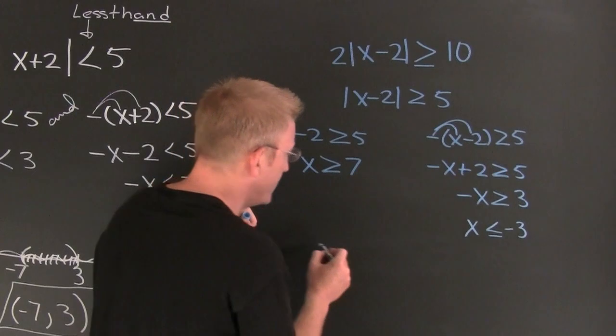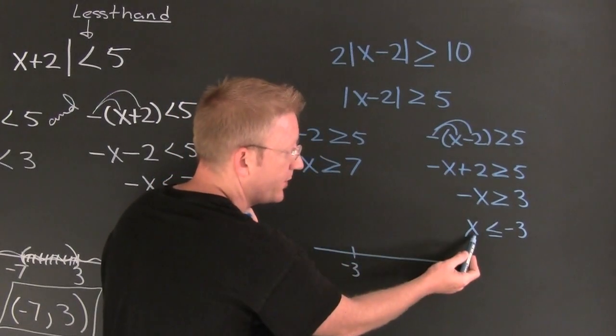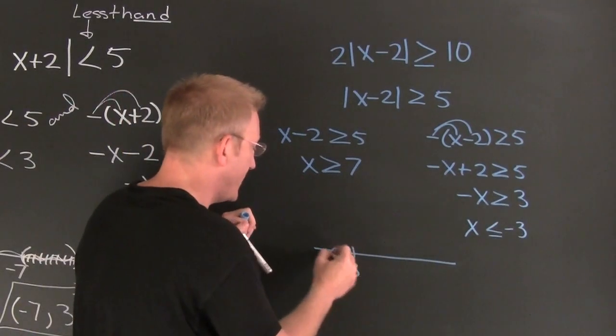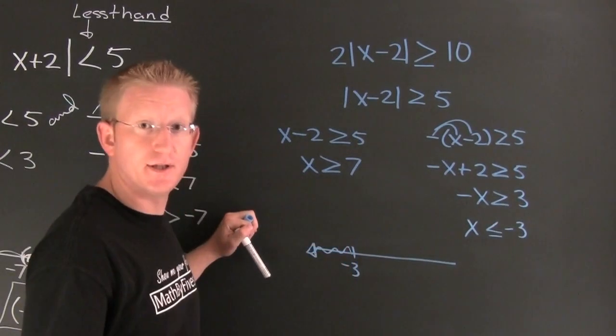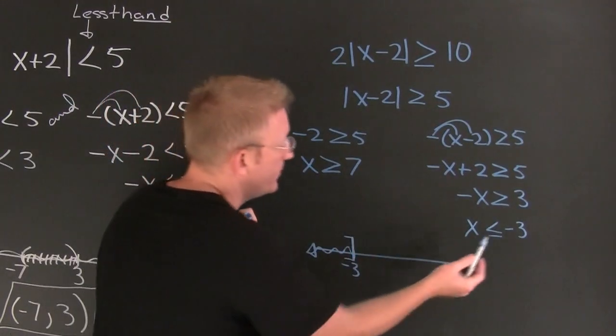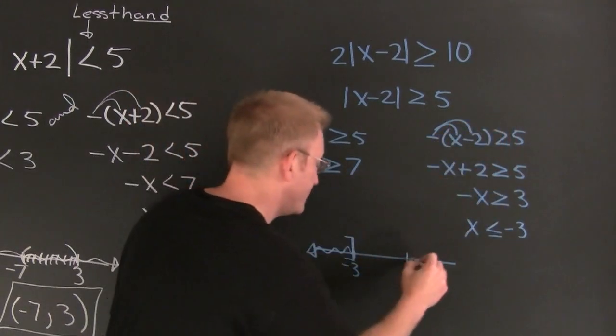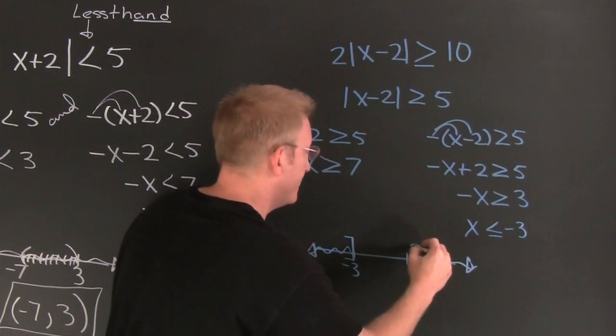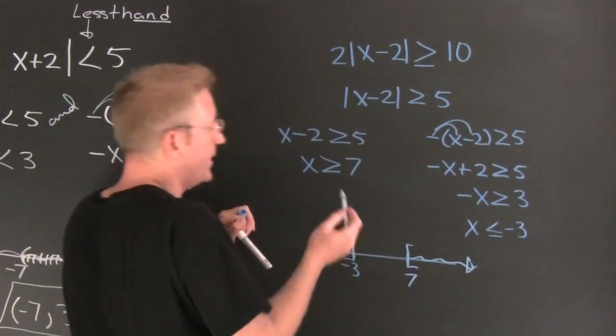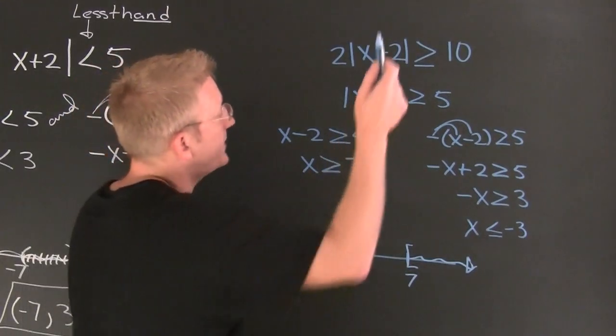I have them both solved. Now I want to graph them both. Over here on that negative 3, which way we shade? Windows. This way. Is it open or closed on that one? That one's closed. Why? Because of the equals to. Over here on the 7 I'm shading walls.